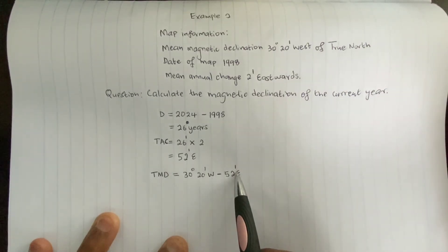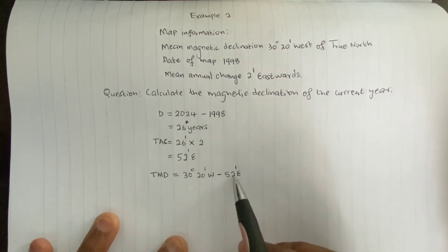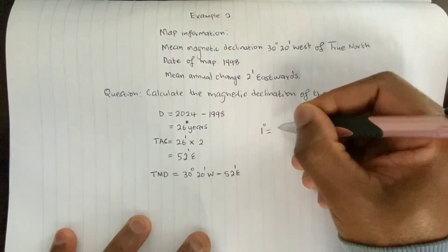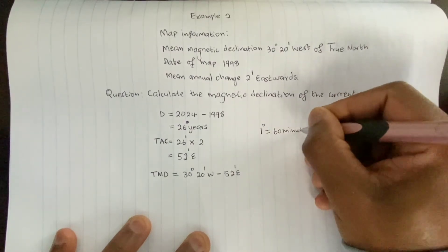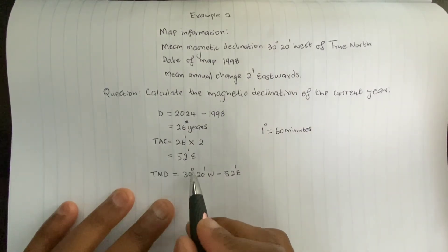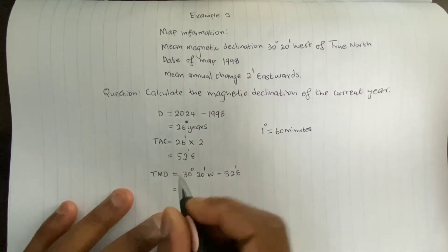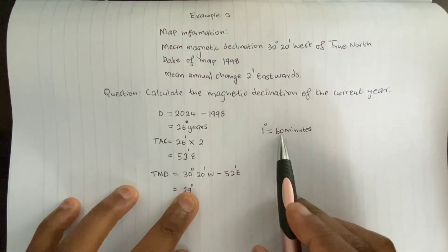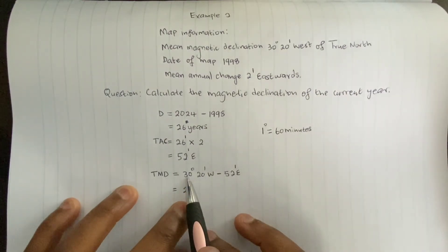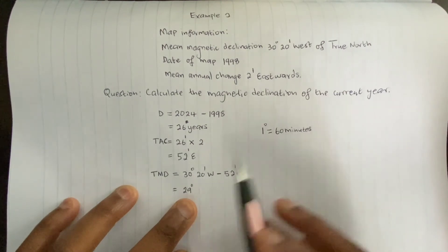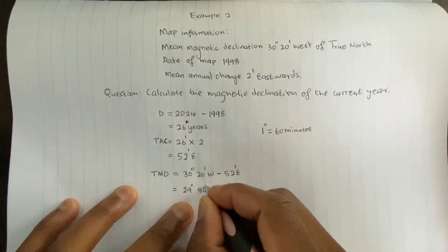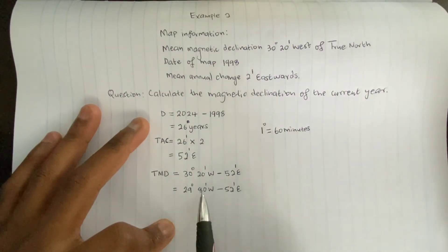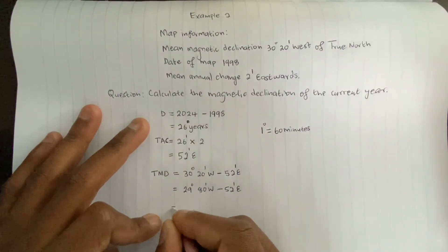There is a problem here — minutes must subtract from minutes, but 20 minutes minus 52 would give a negative number. We know that 1 degree equals 60 minutes, so we borrow 1 degree from 30, leaving 29 degrees. That borrowed degree becomes 60 minutes, added to the existing 20 minutes, giving 80 minutes west. Now 80 minutes west minus 52 minutes east can be calculated without a negative result.